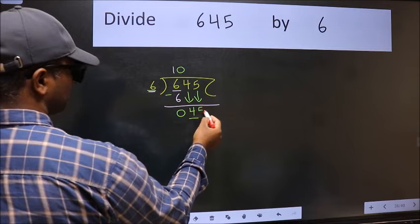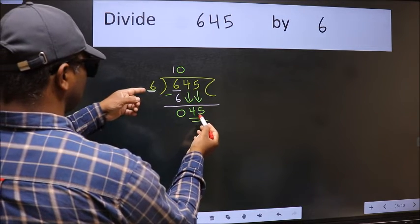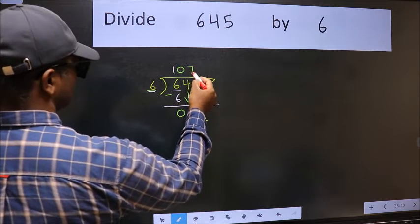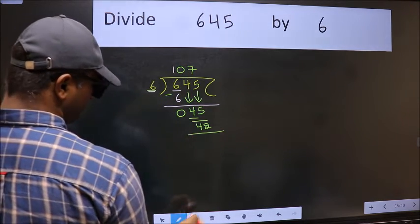Now 45. A number close to 45 in the sixth table is six sevens, which is 42. Now we should subtract.